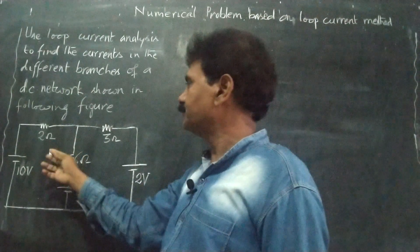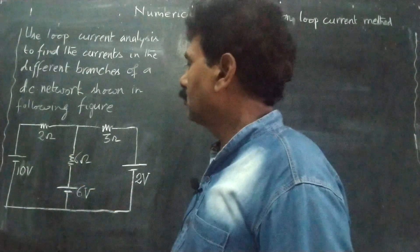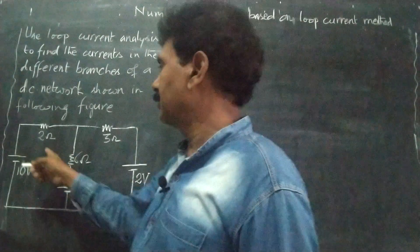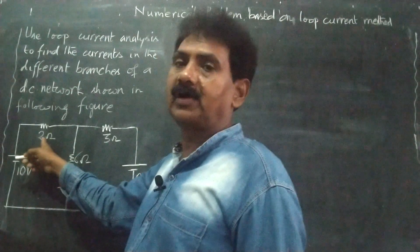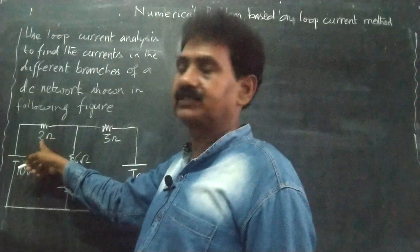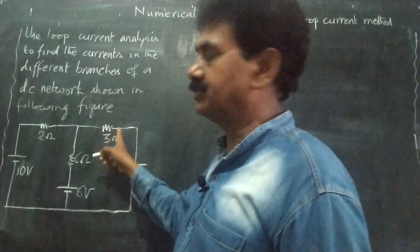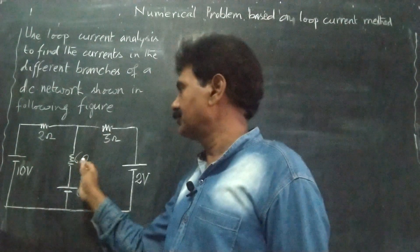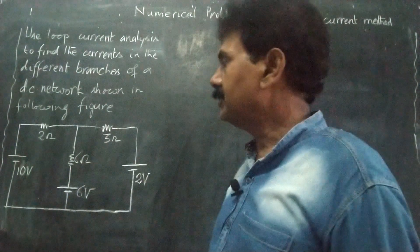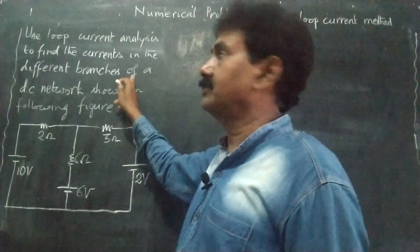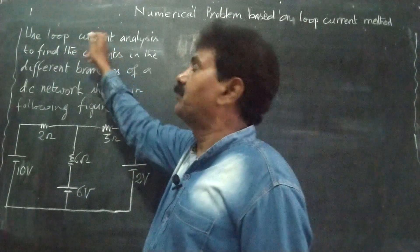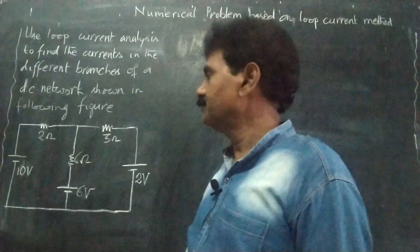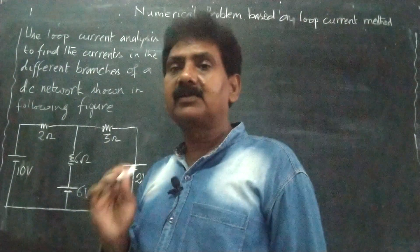This DC network, what do we need to find? The different branch currents. What exactly? Current passing through 2 ohm resistance, current passing through 3 ohm resistance, current passing through the 6 ohm resistance. We have to find out these currents using loop current method. In previous class, what we have seen, we select loops.